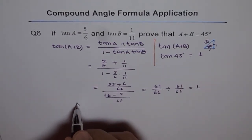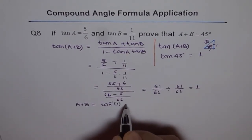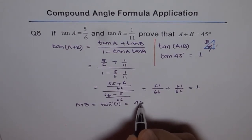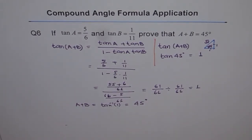So that means A plus B is actually equal to tan inverse of 1 which is 45 degrees. So that's how we can prove that A plus B is 45 degrees.